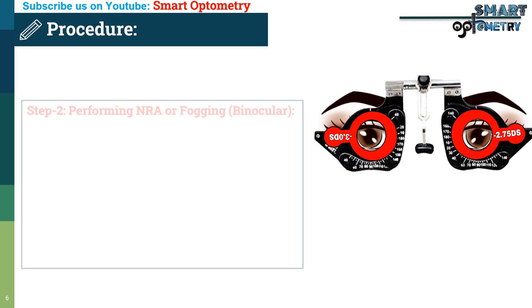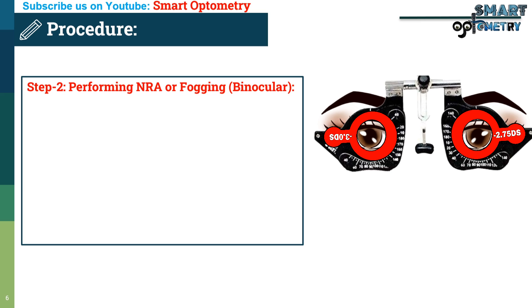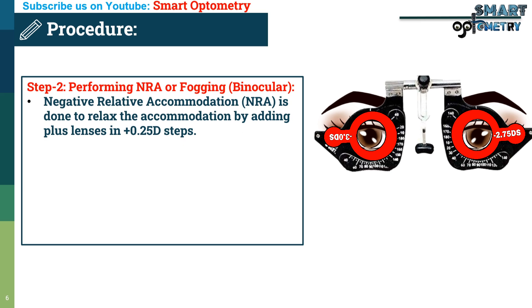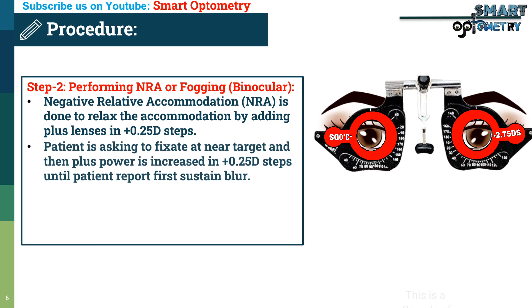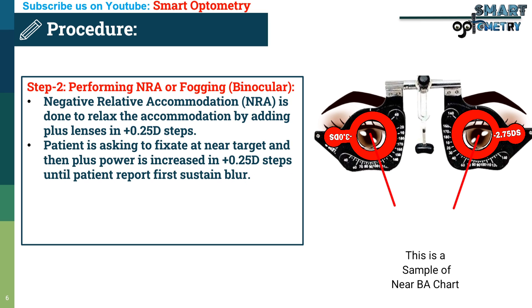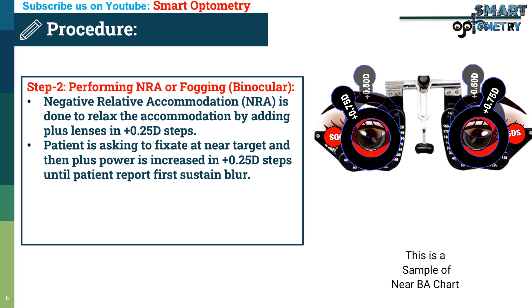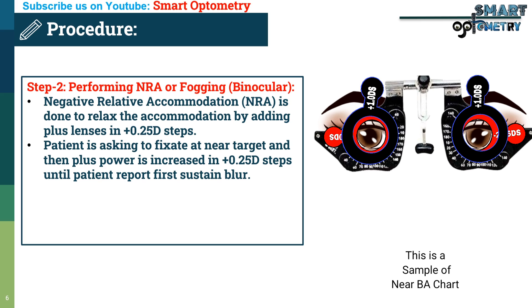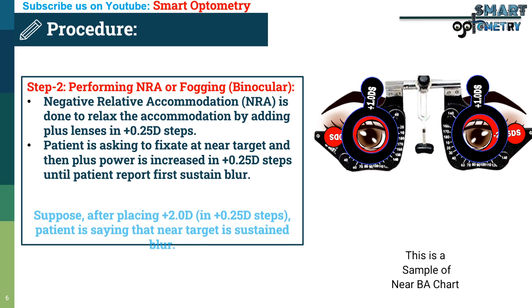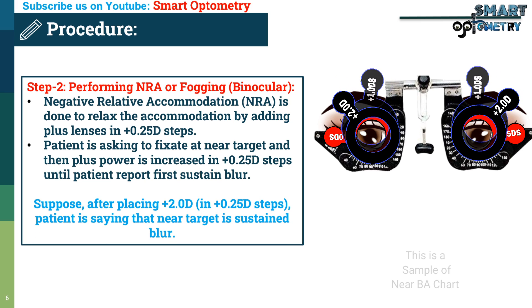Step 2 — performing negative relative accommodation or fogging. NRA is done to relax accommodation by adding plus lenses in +0.25 diopter steps. The patient is asked to fixate a near target, and plus power is increased in +0.25 diopter steps until the patient reports the first sustained blur. For example, after placing +2.00 diopters total, the patient reports sustained blur.